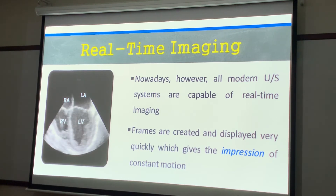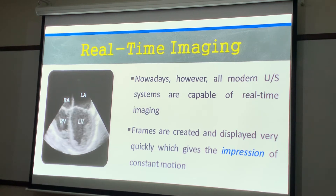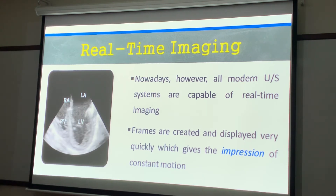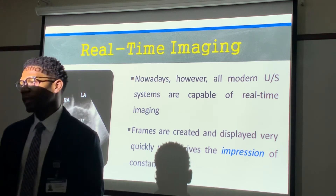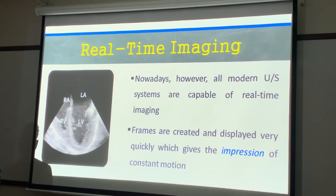Real-time imaging allows us to visualize structures such as the heart in real-time — we're able to see those valves opening and closing. All modern ultrasound systems are capable of real-time imaging. The frames are created and displayed very quickly, which gives the impression of continuous motion. Sound just travels so fast that it appears to be in continuous motion, but it's really taken picture by picture. You can roll back 540 frames on the IU-22 in about 10 seconds.